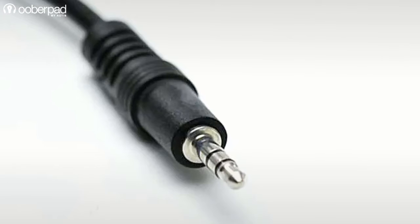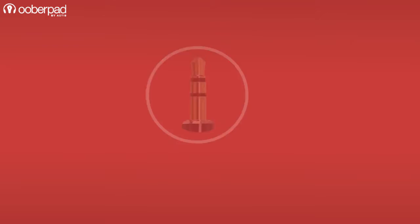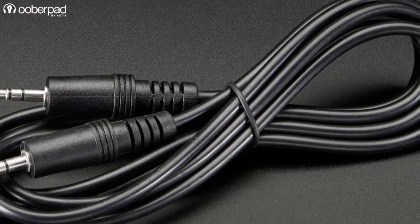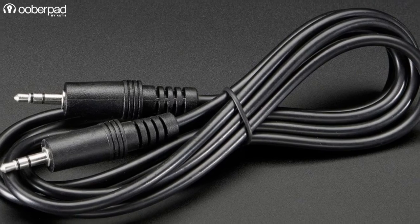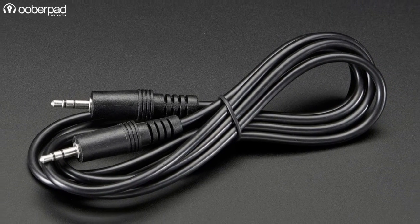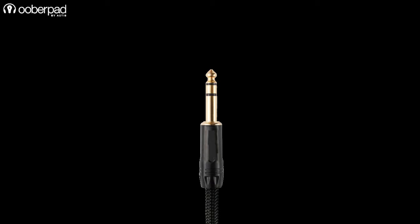First let's look at each connector type individually. TRS stands for tip, ring and sleeve connector. It is often used for stereo signals as the additional ring gives the two contacts a way to get left and right audio channels. You can also use it for balanced audio where the audio signal is carried from the top while the ground is on the sleeve. TRS configuration has three sections that indicate the three pathways that run through the cable.